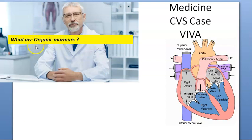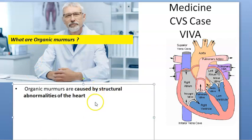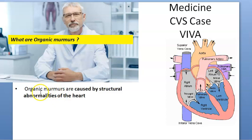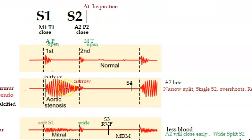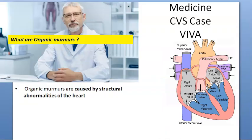What are organic murmurs? Organic murmurs are caused by a structural abnormality of the heart. For example, the ejection systolic murmur can be because of aortic stenosis — that itself is an organic murmur. Also, ventricular septal defect and any structural defect can cause organic murmurs.